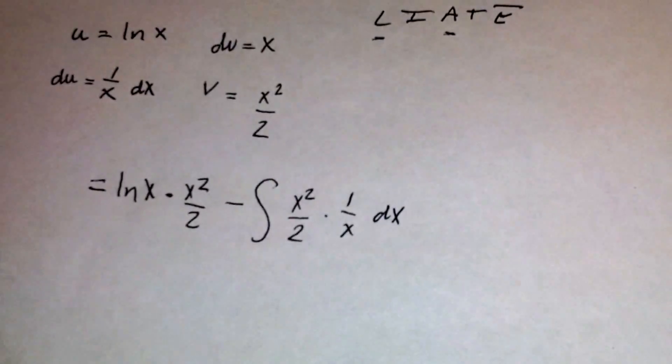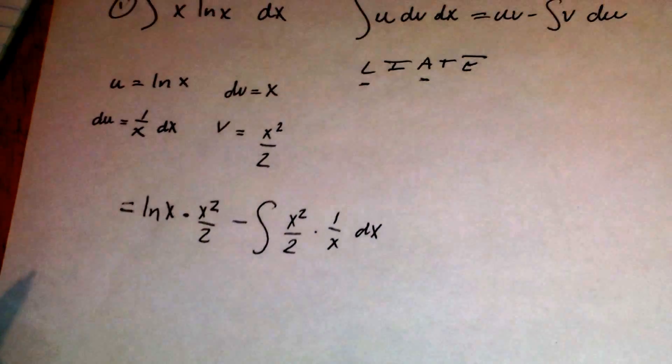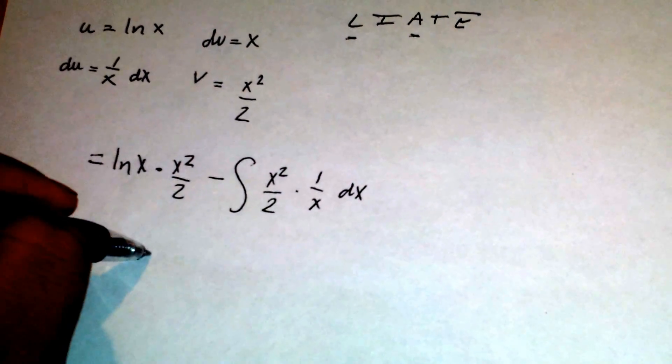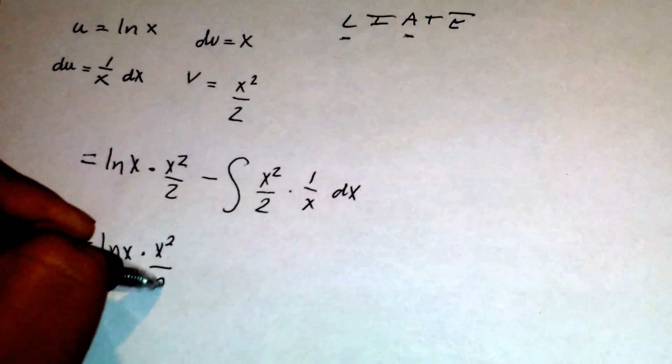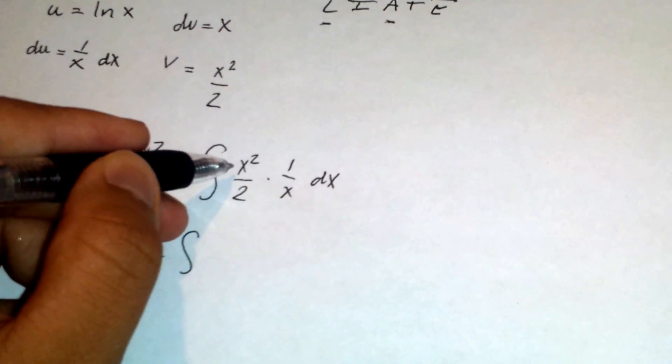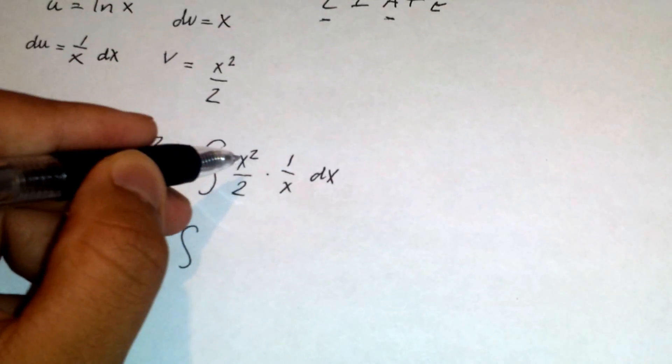Now the next step is to simplify. We can leave the first part the same since it's already done. On the second part, inside the integral, as you can see, 1 half is a constant in front of x squared.